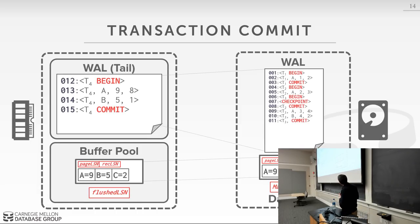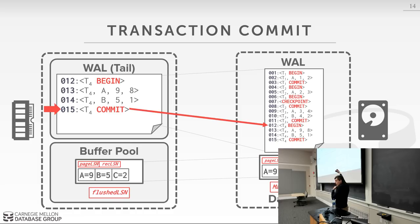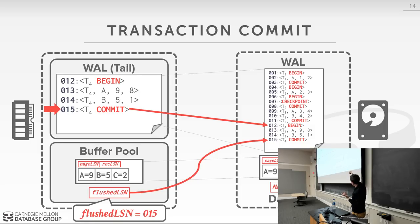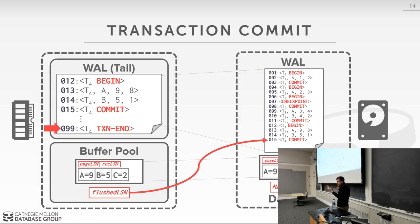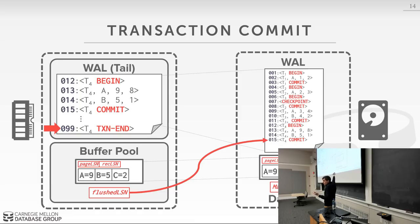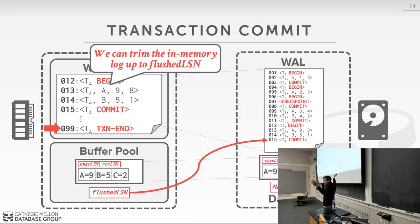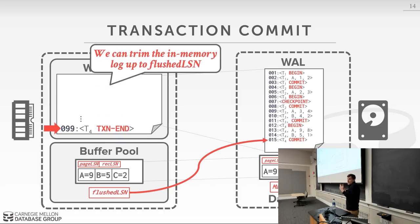In an example: a transaction does two updates, then we have a commit record. We flush everything in memory before the commit record to disk, then update the flushed LSN to log record 15. Later we add our transaction-end record, at which point we know everything about this transaction is done and we can discard its internal state. We can reclaim the memory since the log is safely on disk.